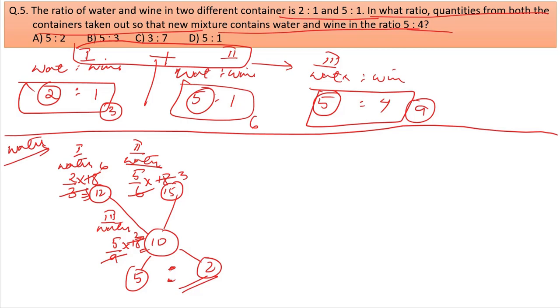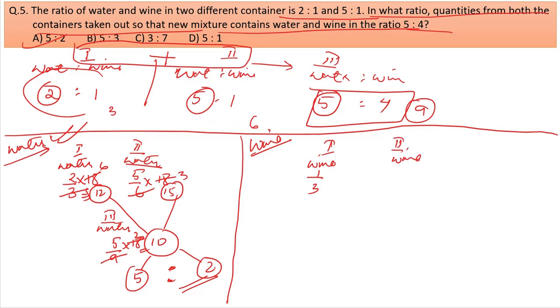We can verify with wine. Container 1 has wine 1 out of 3, so 1/3. Container 2 has 1 out of 6, so 1/6. Final mixture needs 4 out of 9, so 4/9.